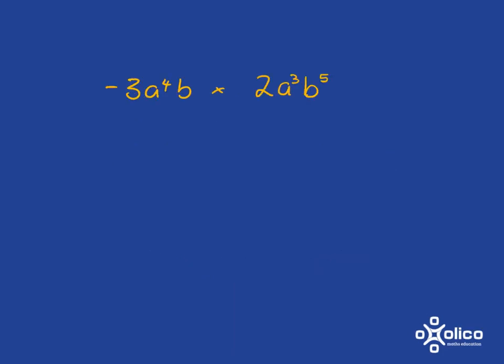Let's have a look at how we'd apply this in an example. If we needed to do a calculation like this, we start by looking at each bit in turn. Let's start with the coefficients and multiply them together. We've got negative three multiplied by two. That gives us negative six.